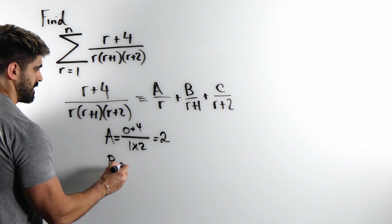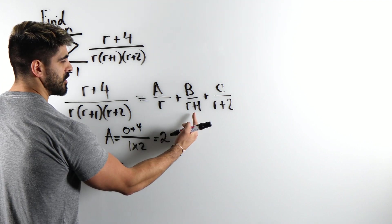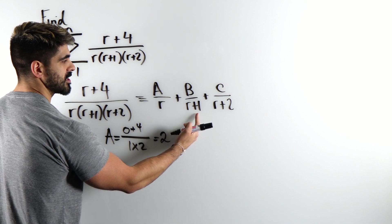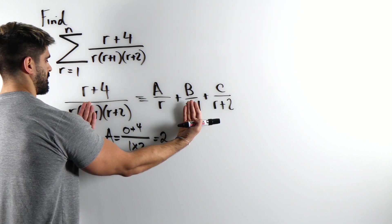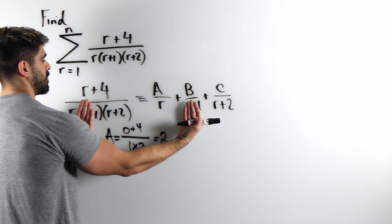Now to find B, look at the denominator. What value of r makes this 0? That's going to be minus 1. Cover it, cover it. We're going to sub in minus 1 now.